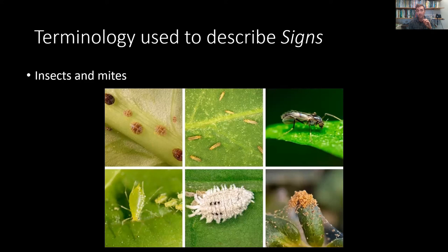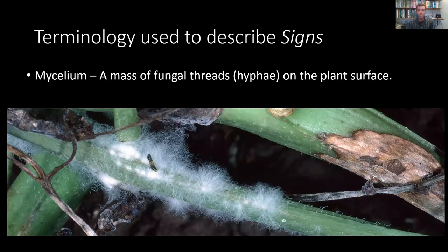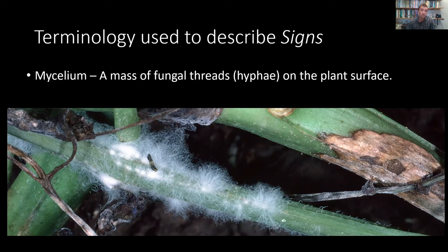One thing to pay attention to when identifying insects and mites: are you looking at the problem, or are you looking at a predator of the problem? Just because you see a bug doesn't mean it's a problem. We've got to get that ID just right — are you looking at something you want to eliminate, or something you want to encourage as natural pest control? You may also see mycelium — a mass of fungal threads known as hyphae — found even on the plant surface as a fuzzy network of typically white threads. If you see that, it's a clear indication that fungi are present.